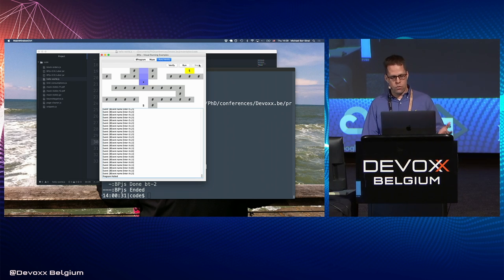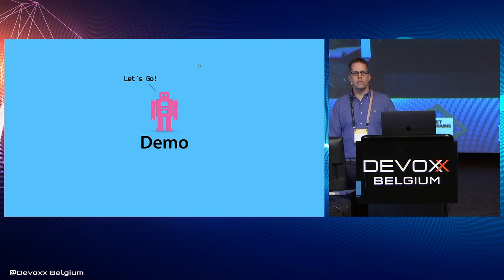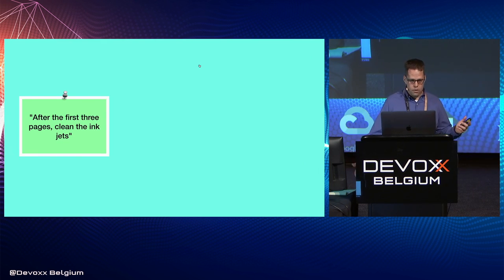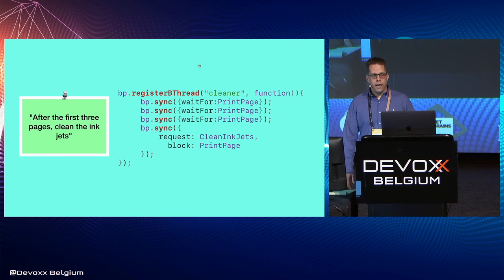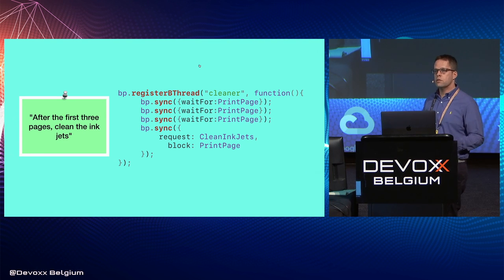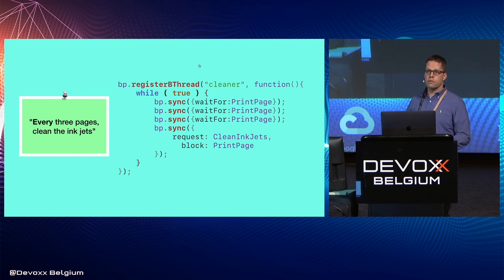This is a weird paradigm, and the question is why would anyone want a paradigm that allows ghost robots to roam mazes with no actual robots? I think what got me personally excited about behavioral programming is that this is not the weird paradigm — it's the other paradigms that are weird. Take this simple requirement: after the first three pages, clean the inkjets. You can represent this pretty directly in behavioral programming — wait for three print pages, then require that clean inkjets happen before any other page is printed. If you want it every time, just put it in a while loop.